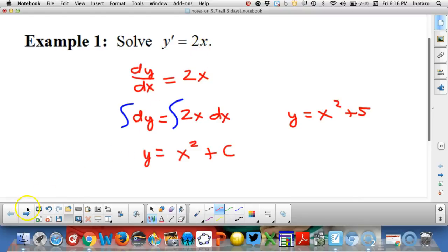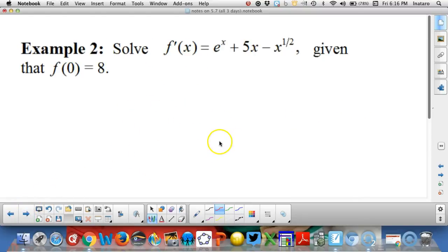Let's take a look at another example. This one says solve f prime of x equals e to the x plus 5x minus x to the 1 half power, given f of 0 is equal to 8.